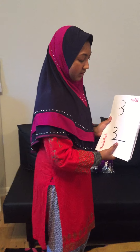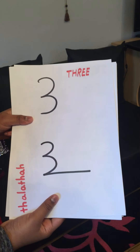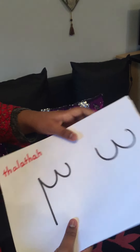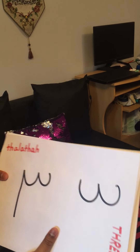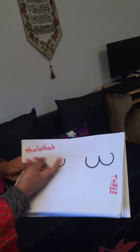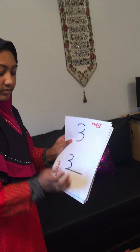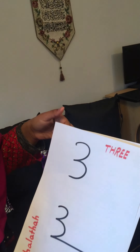Number three in English looks like this, and if you turn the Arabic form around and add a line, it becomes three in English. In Arabic it's called Thalatha. If you turn it around and take away the line, it becomes the three we have now.